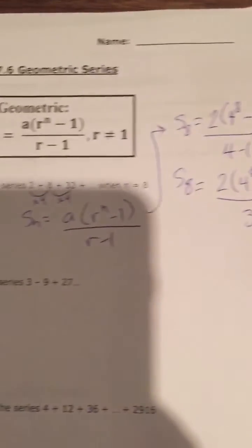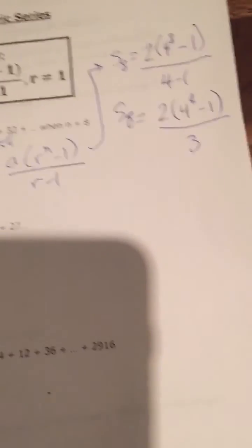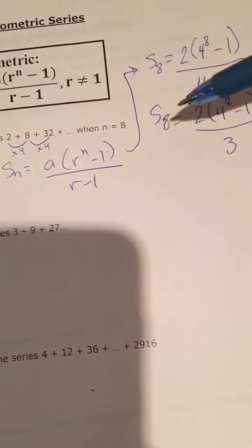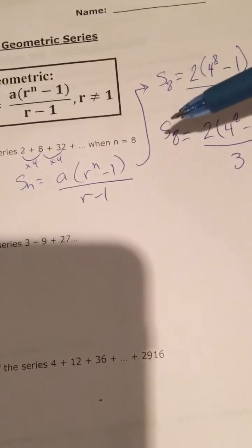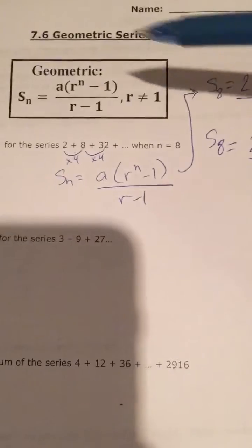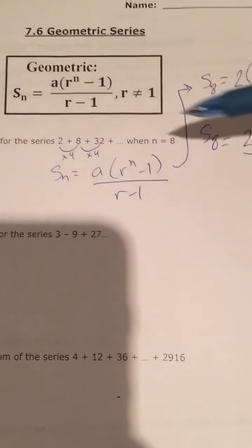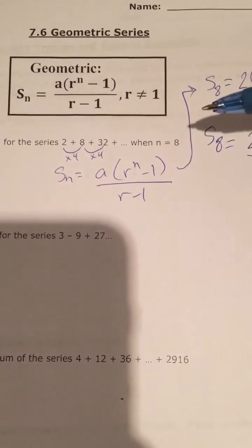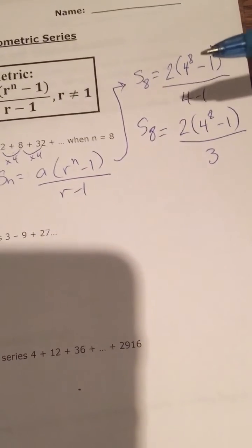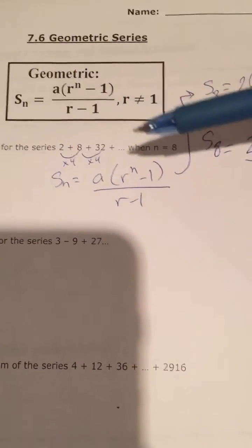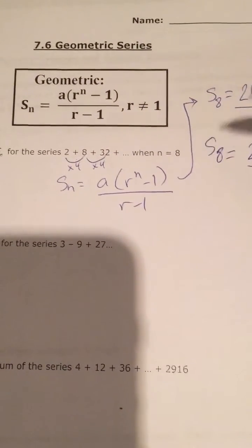Keep in mind that the sum of the first 8 terms should not be a decimal. If you end up with a decimal, you've done something wrong — it has to be a whole number because these are all whole numbers being added together. Also, you must use the Sn formula. You would not carry out the pattern for 8 terms and add them with a calculator. That would not be correct — especially if you were finding the sum of the first 800 terms. This is how you get your marks on a test.